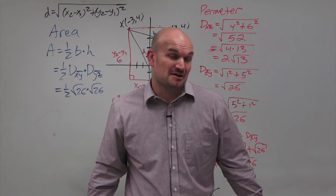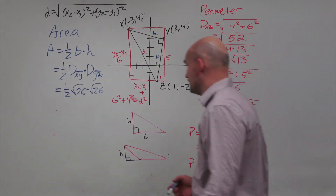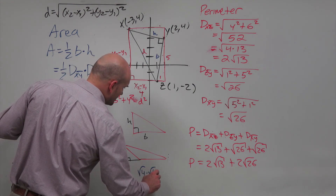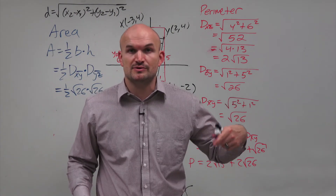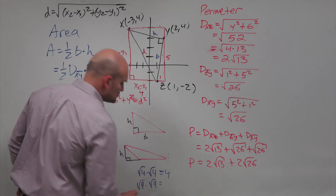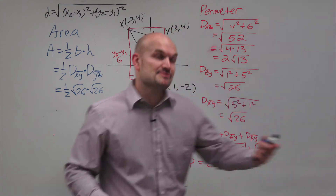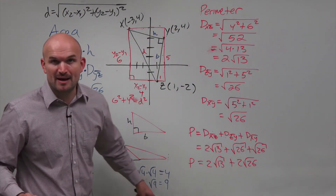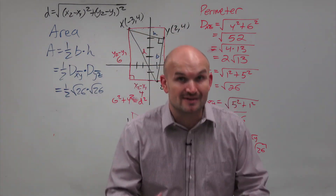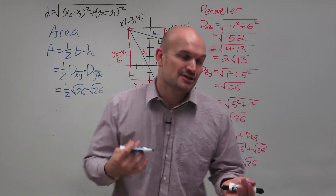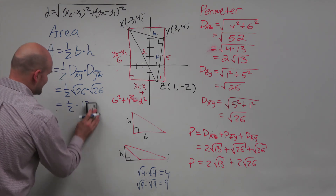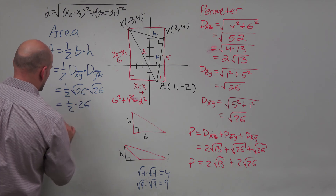Now, a common question from students is what is the square root of 26 times the square root of 26? Think of it this way: the square root of 4 times the square root of 4 is 2 times 2, which equals 4. The square root of 9 times the square root of 9 is 3 times 3, which equals 9. So the square root of 26 times the square root of 26 is 26, because the square root and the square are inverse operations. So the area equals one half times 26, which equals 13.